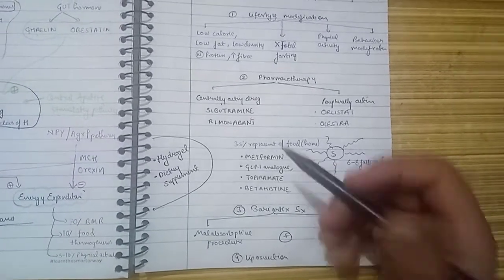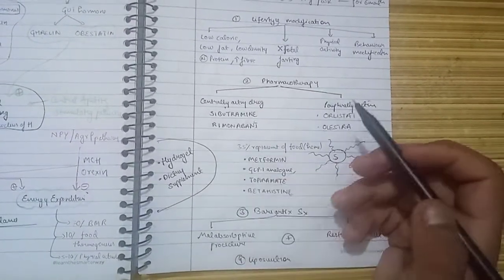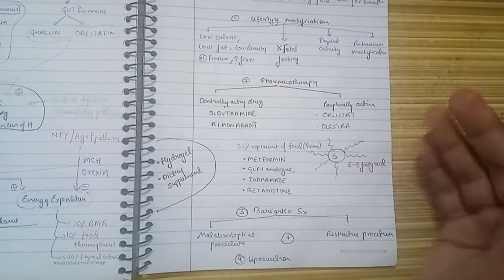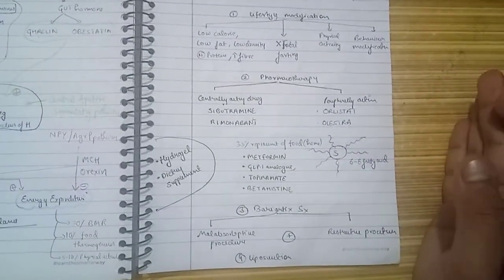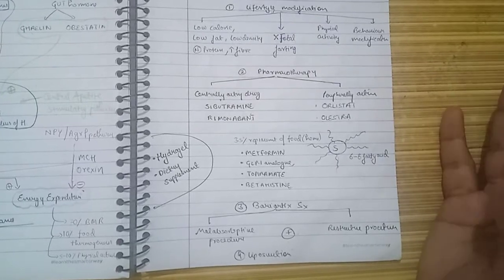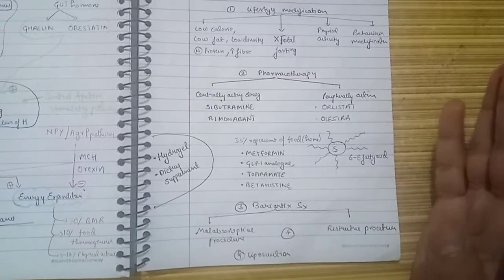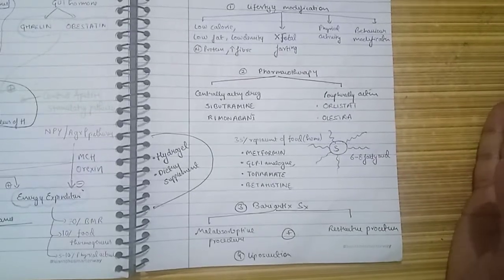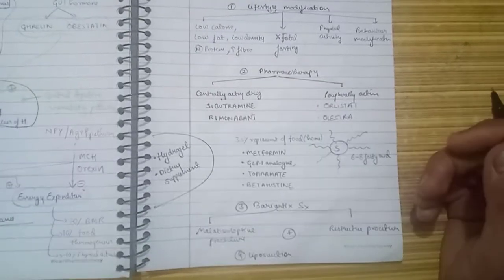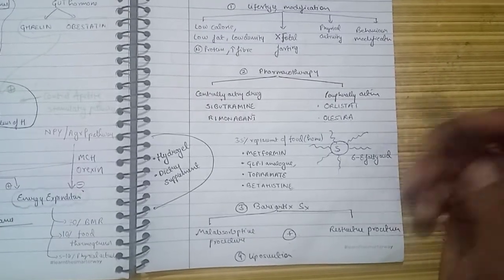Another option is hydrogel, an inert molecule given before meals twice a day. When given, hydrogel swells up in the stomach and makes the person feel satiated earlier, decreasing food intake. It passes as such in the stool.